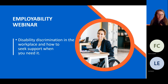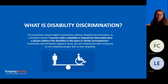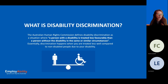So what is disability discrimination? According to the Australian Human Rights Commission, disability discrimination is a situation where a person living with disability is treated less favourably than a person without disability in the same or similar circumstances. Discrimination happens when you are treated less well compared to a non-disabled person due to your disability. This means that if you've been treated unfairly because you have a disability, or you used to have a disability, or perhaps someone thinks that you have a disability, there are laws in place to protect against that unfair treatment.